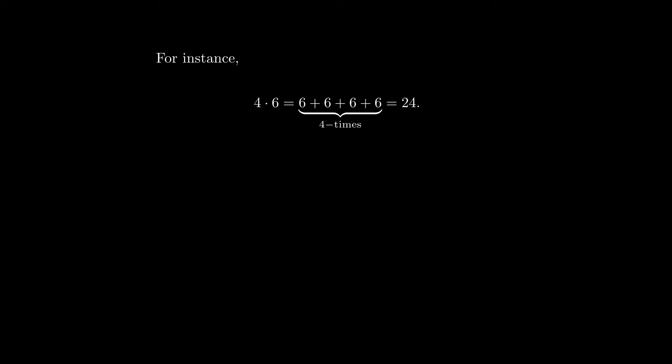For example, 4 times 6 means taking 6 and adding it 4 times, giving 24. In the second example, negative 4 times 6: we take the additive inverse of 6, which is negative 6, and add it 4 times — because minus of negative 4 is 4 — giving negative 24. So the addition is always performed a positive number of times.